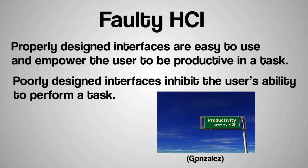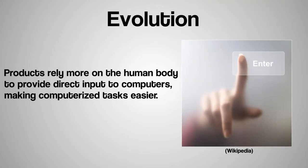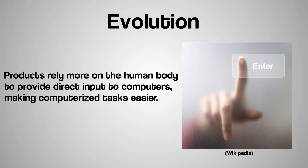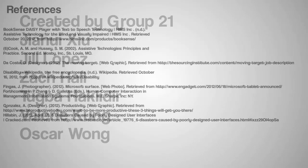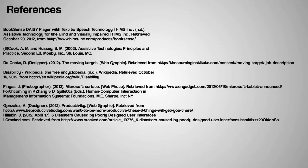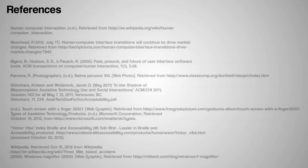We can see how important the design process is for the technology we use every day. From the mouse to touch screens and Kinect, the ways in which we interact with computers have changed greatly since the computer's infancy and continue to change. While it is impossible to predict exactly what the next innovation in this rapidly changing field will be, we can see that products rely more and more on the human body to provide direct input to computers, making computerized tasks easier.